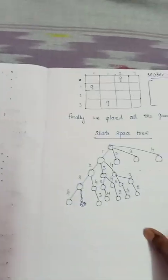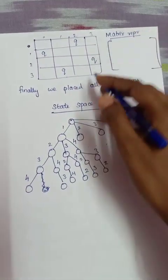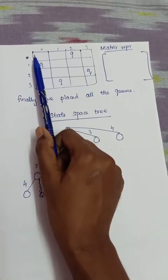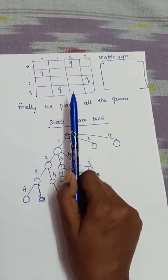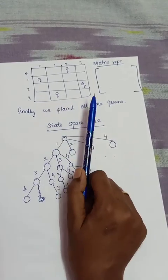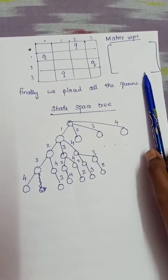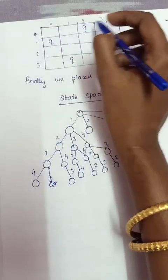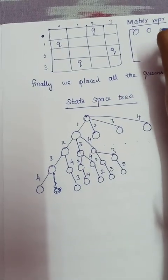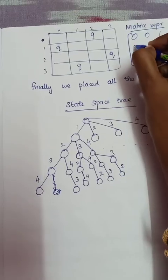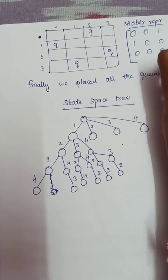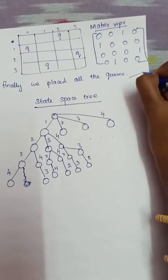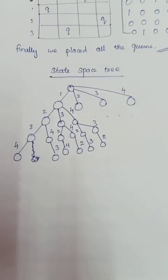We check board[3][1] — it is also safe. We now have all four queens placed. The positions are: board[1][0], board[3][1], board[0][2], and board[2][3]. This is our final answer — all four queens are placed successfully.